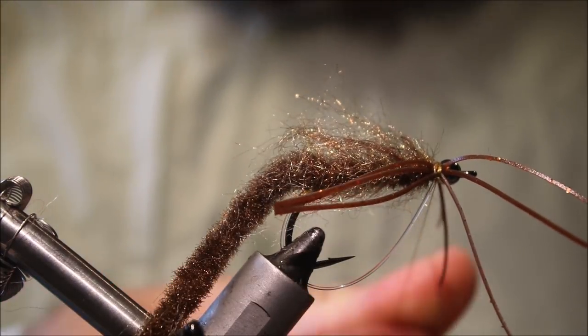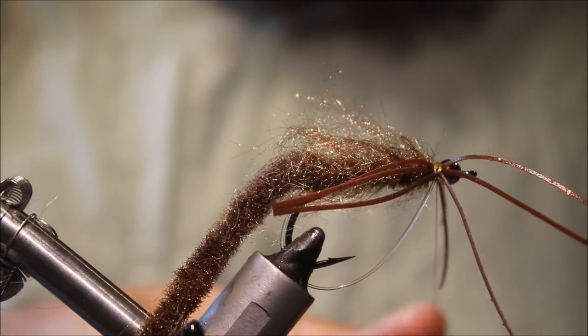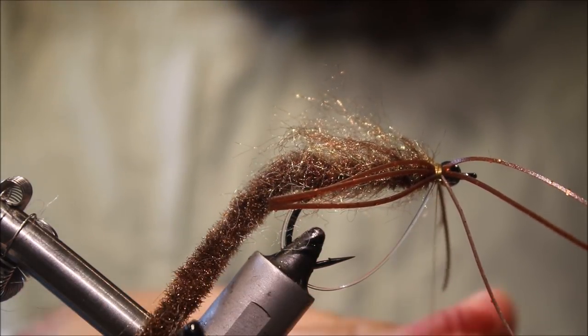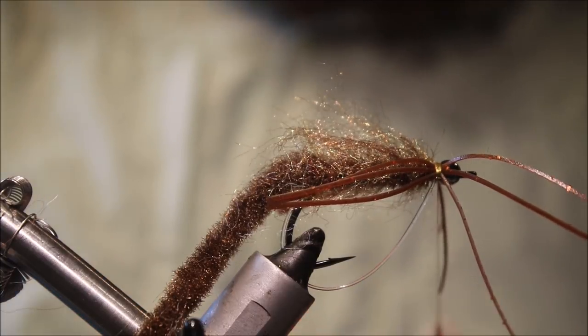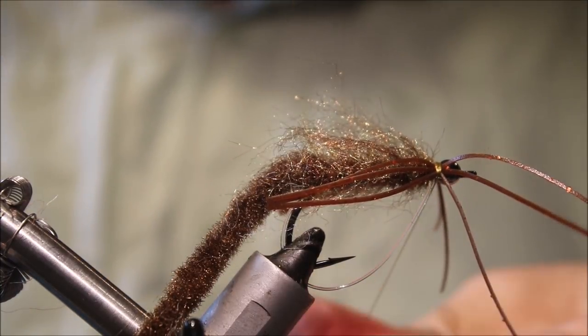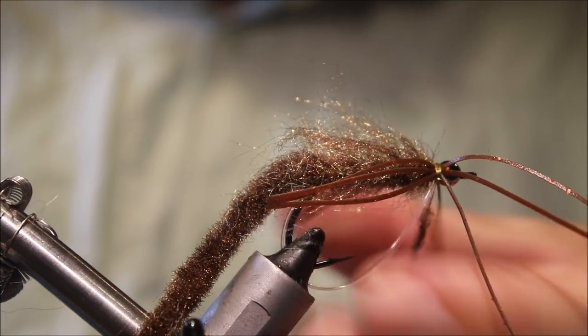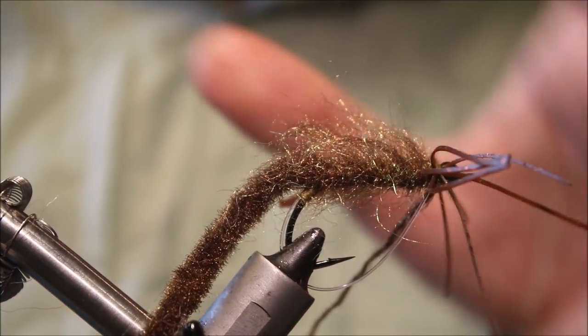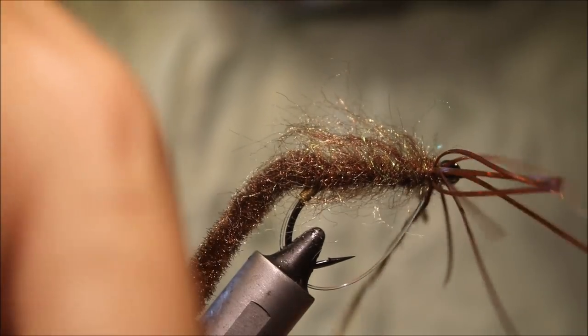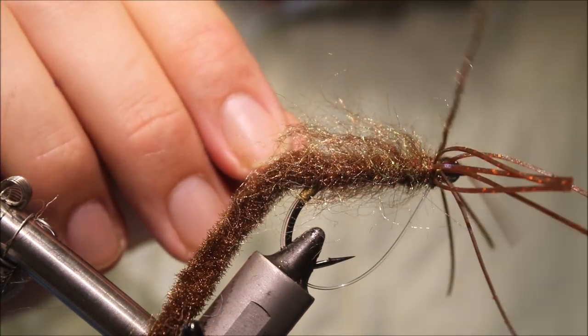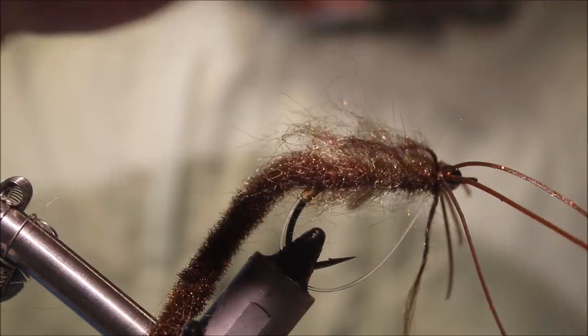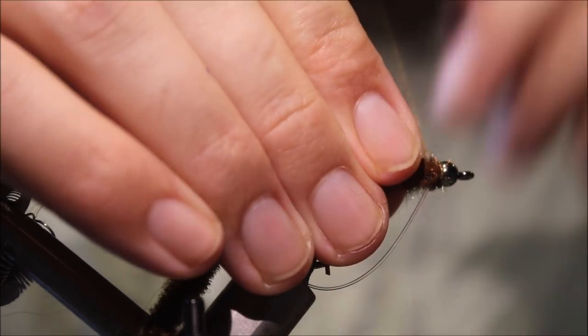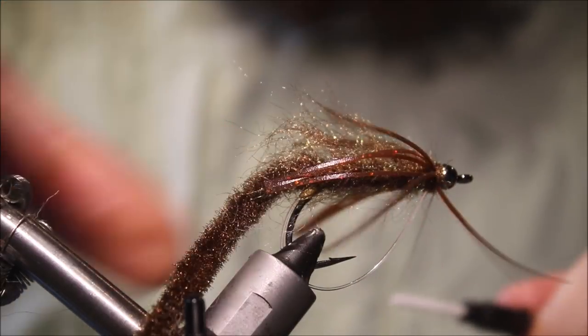Three or four wraps is plenty. Come in with a little bit more dubbing, just to tie all this together. Same stuff, same SLF mix. Tie a couple of wraps behind the legs there. Come in one, just one in between, and then wind in in front of them.